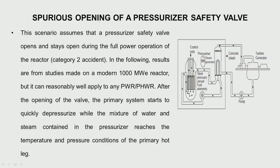In the pressurizer there is a safety valve at the outlet. Consider a scenario where the plant was operating at full power and the pressurizer safety valve opened due to pressure but did not close. This event is exactly similar to the Three Mile Island reactor accident. The reactor would have been tripped and other things would happen — let us see how the parameters went through.